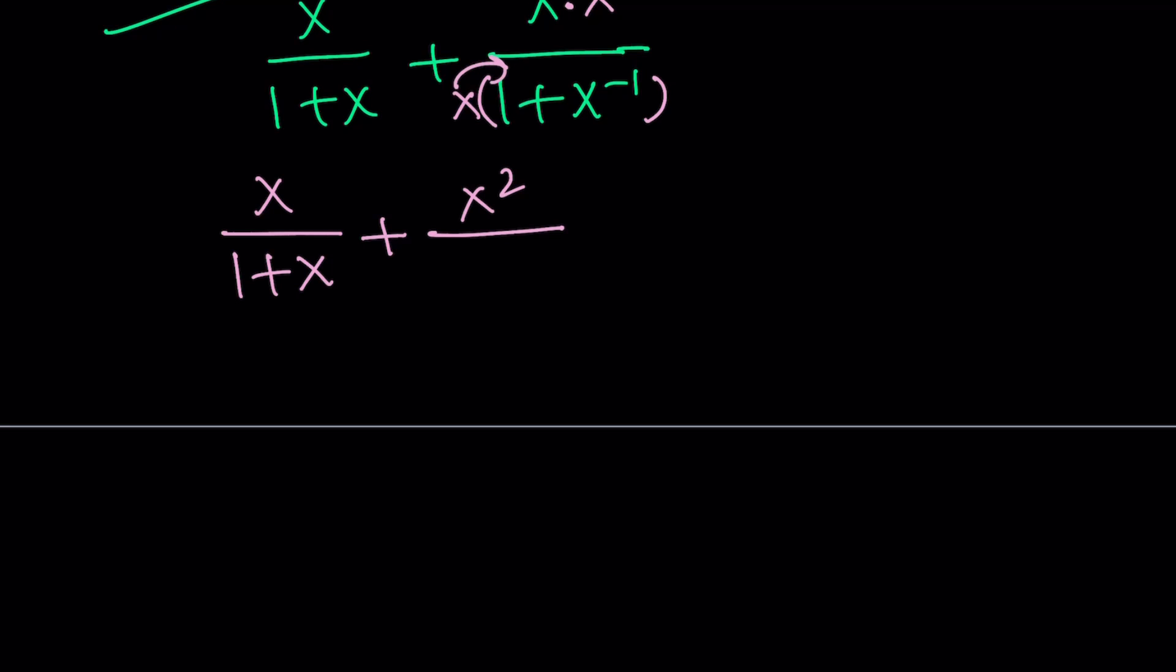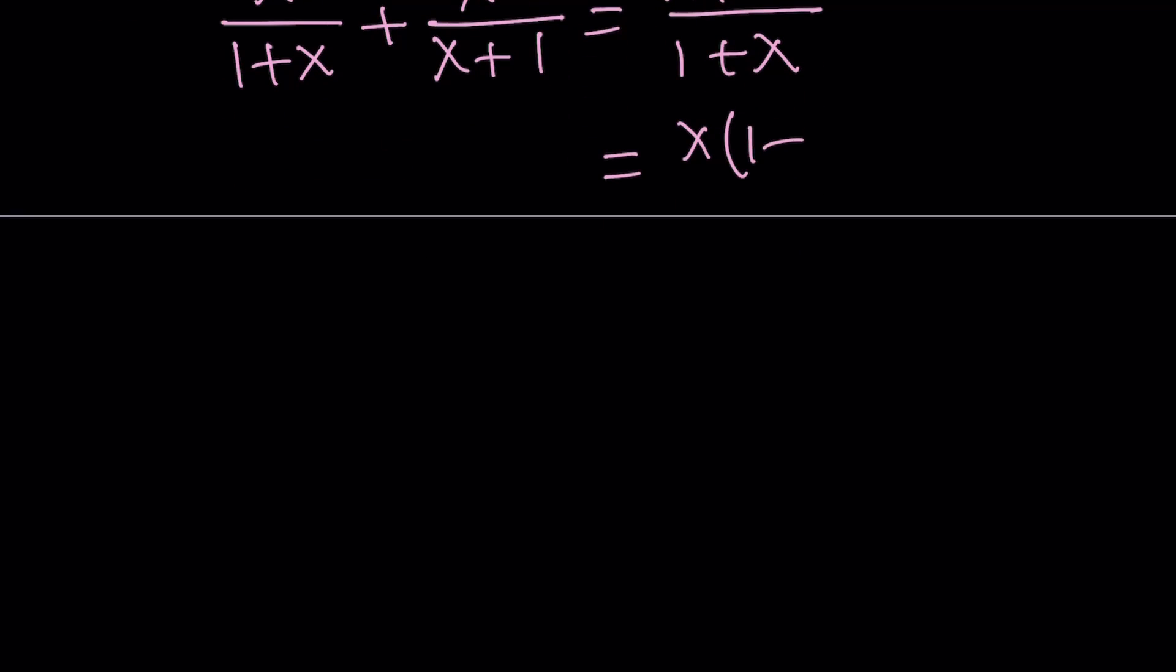Now, when you go ahead and distribute, you get x plus x times x to the power of negative 1 is just 1. And now, since you have a common denominator, you can just go ahead and pretty much do the same thing here.